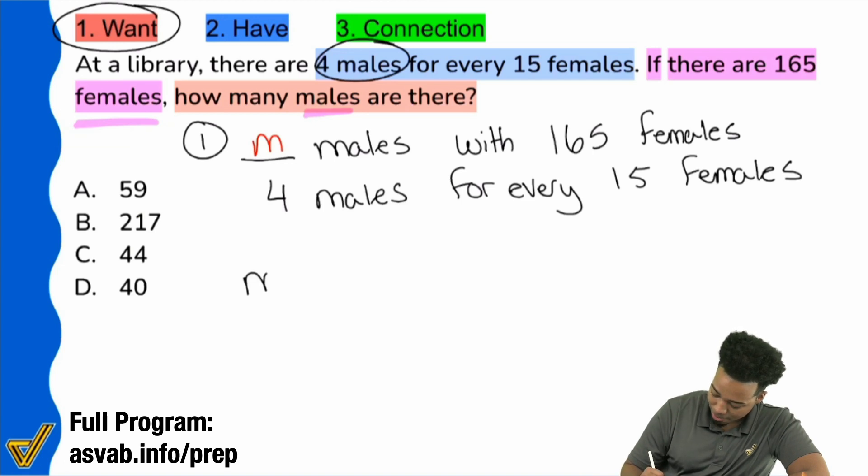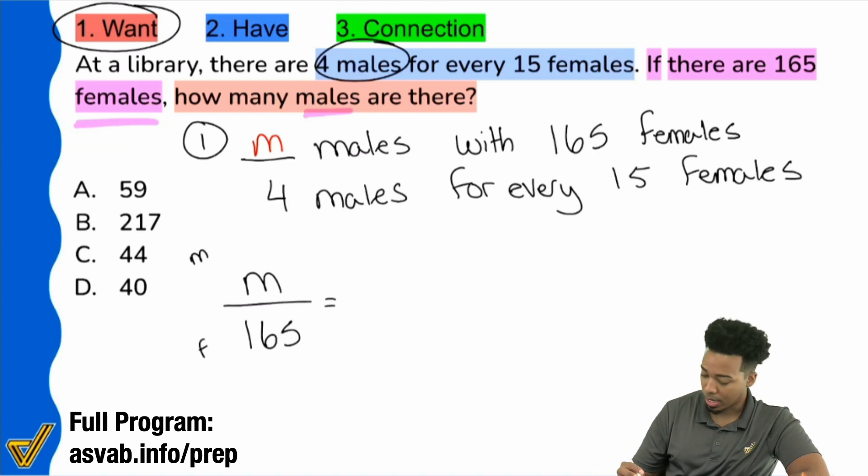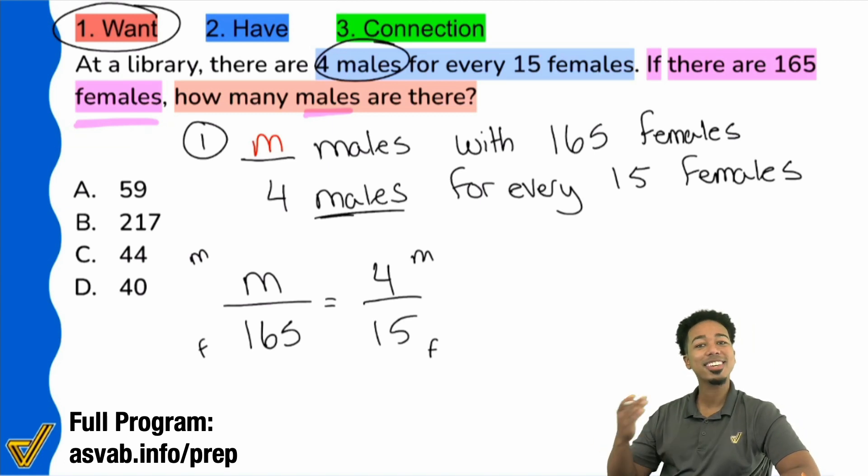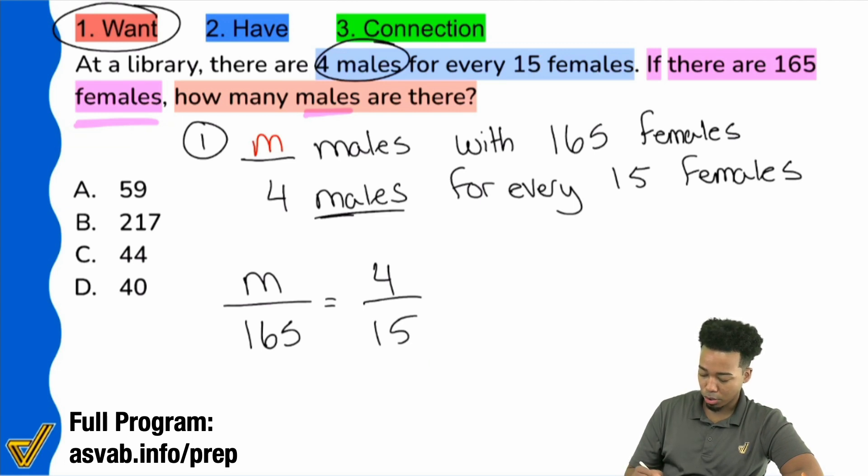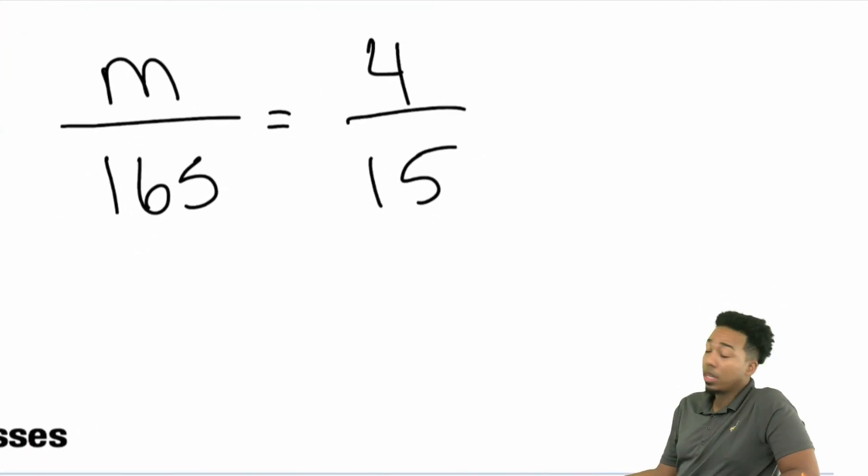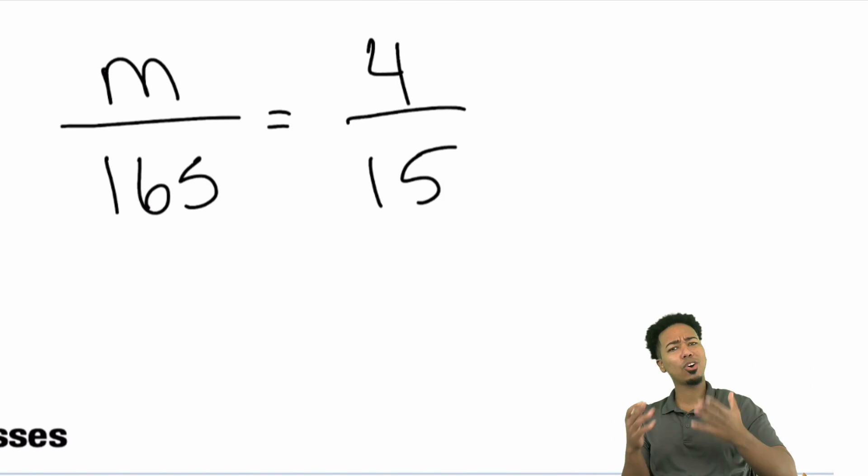So here I'm going to set it up with m over 165 because I'm comparing males to females. And then on the right side, I'm going to write 4 over 15. Because again, that's 4 for males, 15 for females. Compare the same things in the same way. You could even go males to males, m over 4, 165 over 15. That would work out just fine too. But here's the beauty of what I'm going to show you. Here's the mental math trick that I really want to make sure you understand. Because really when you look at this, a lot of us think, hey, let's just go ahead and cross multiply and divide, right? That's the main way that we've been taught to do this.